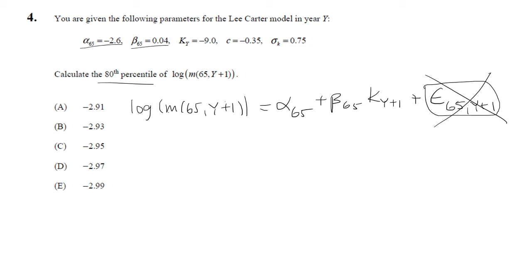But we do have k(y), so I'm going to rewrite k(y+1) as k(y). That would be k(y) plus c plus standard deviation_k times z(t). Z is the z-score for the t-th percentile.